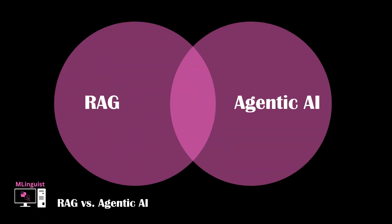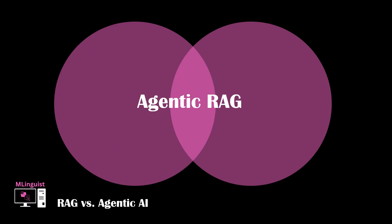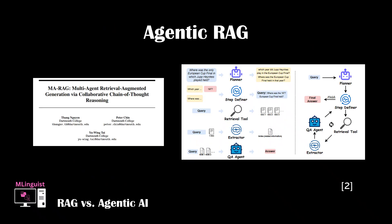RAG and agentic AI are two different concepts, but some systems combine the best of both worlds with agentic RAG. In an agentic RAG system, retrieval grounding is integrated with reasoning and action. Instead of a static retrieve-to-generate process, agents dynamically plan, act, and iterate, orchestrating tools and multiple knowledge sources to solve complex tasks. This paper discusses a multi-agent framework for RAG, using a set of collaborative, specialized AI agents to handle each stage of the RAG pipeline with task-aware reasoning.